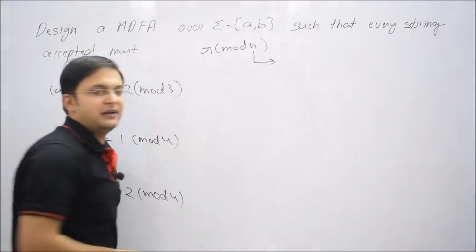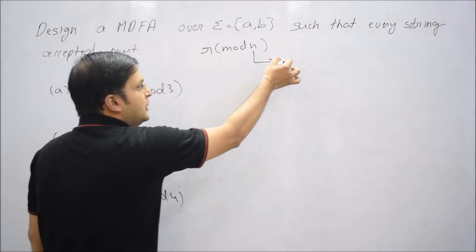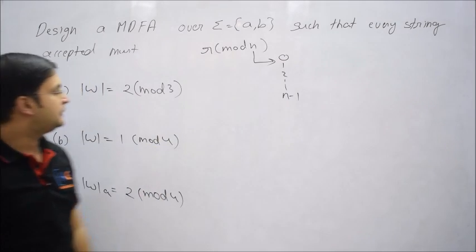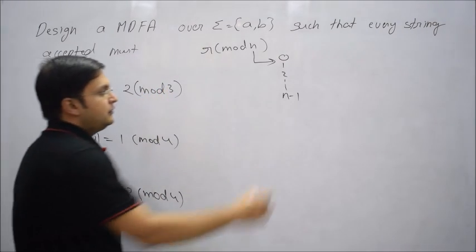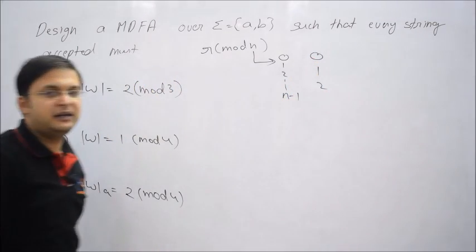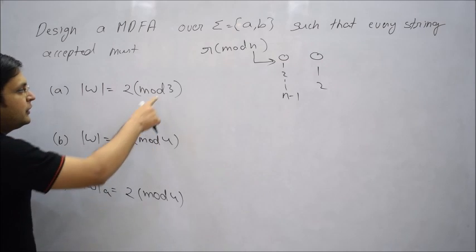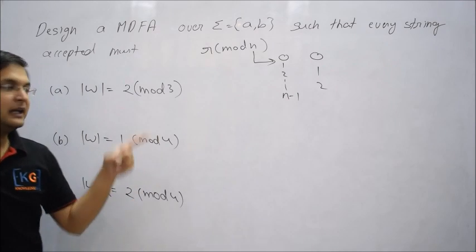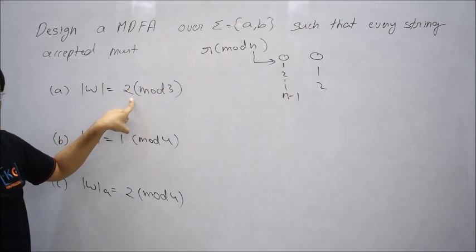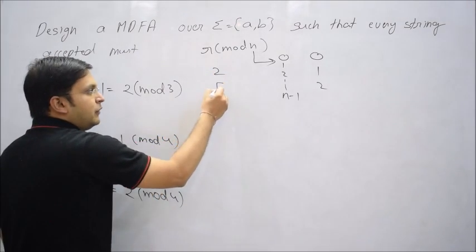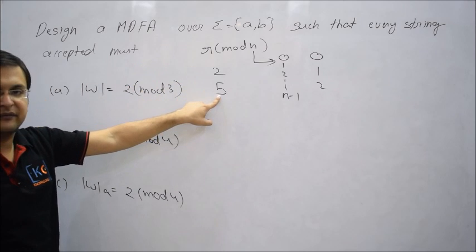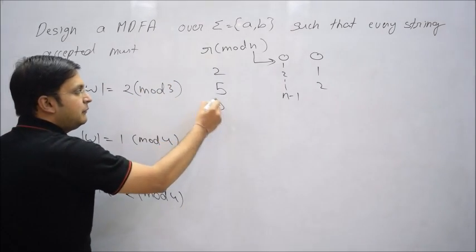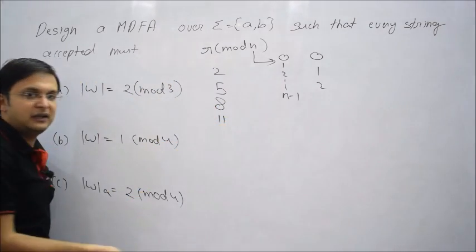If you divide something with n, how many different kinds of remainders can you have? You can have numbers from 0 to n minus 1. So if you divide something with 3, you can have either 0, 1, or 2 — only 3 different remainders are possible. We need to accept all strings whose length, when divided by 3, gives remainder 2. So the lengths are 2, 5, 8, 11 — that is the pattern r mod n.